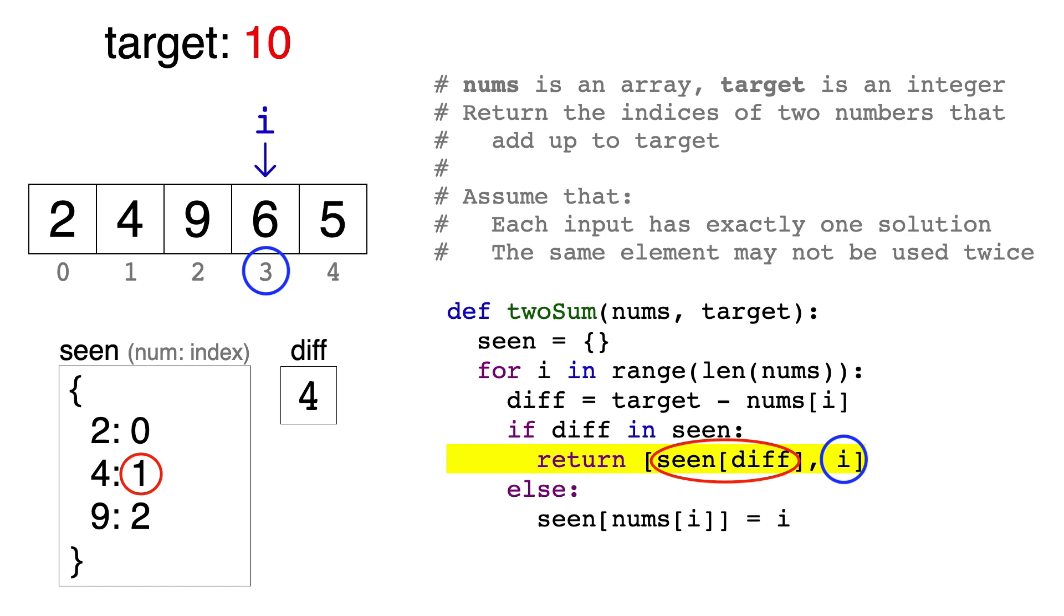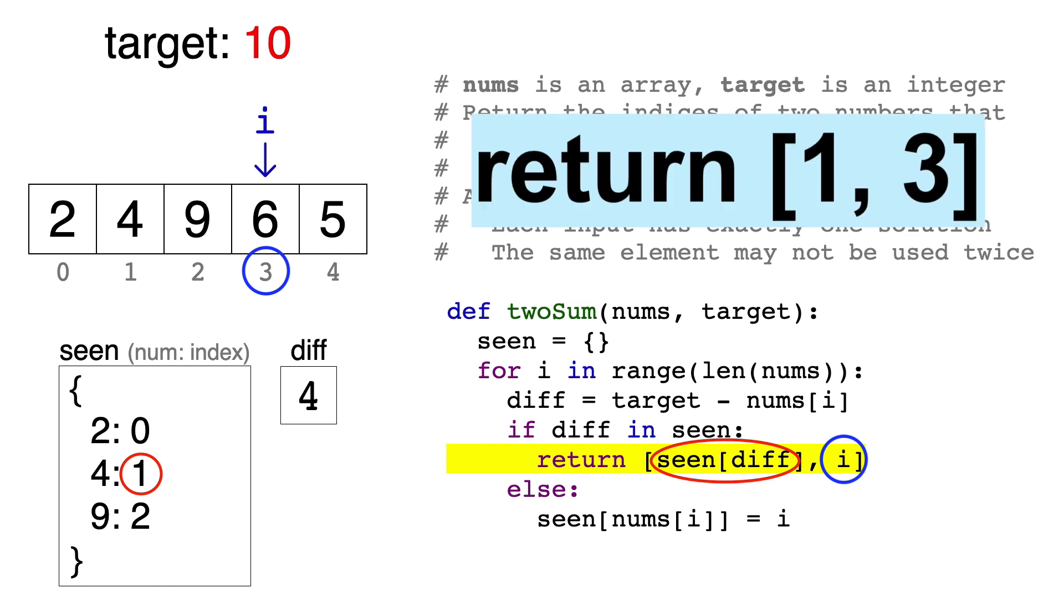So we return an array that has 1 and 3. And if we double-check here, 1 and 3 are in fact the indices of 4 and 6, which do add up to 10.